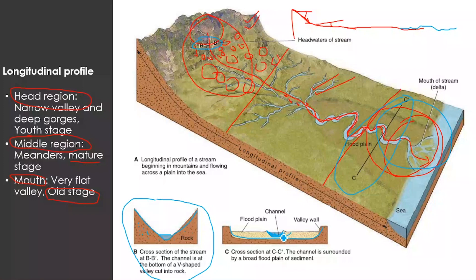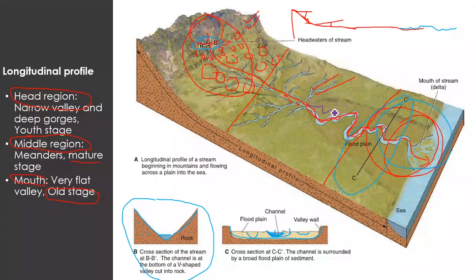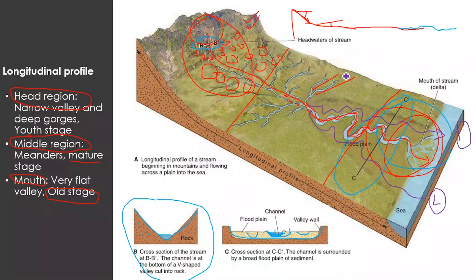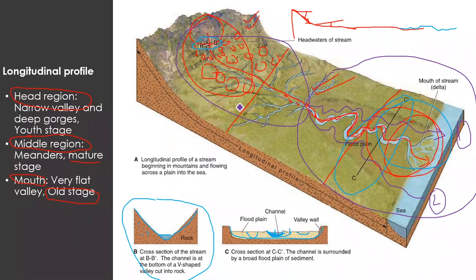Water may flow on one channel at one time and shift to another part at another time. This kind of channel shifting is possible in the middle and lower parts of the river. In the head region, however, the river flows mostly through bedrock, so shifting is more difficult — instead, more eroding and deepening of the valley processes are active.